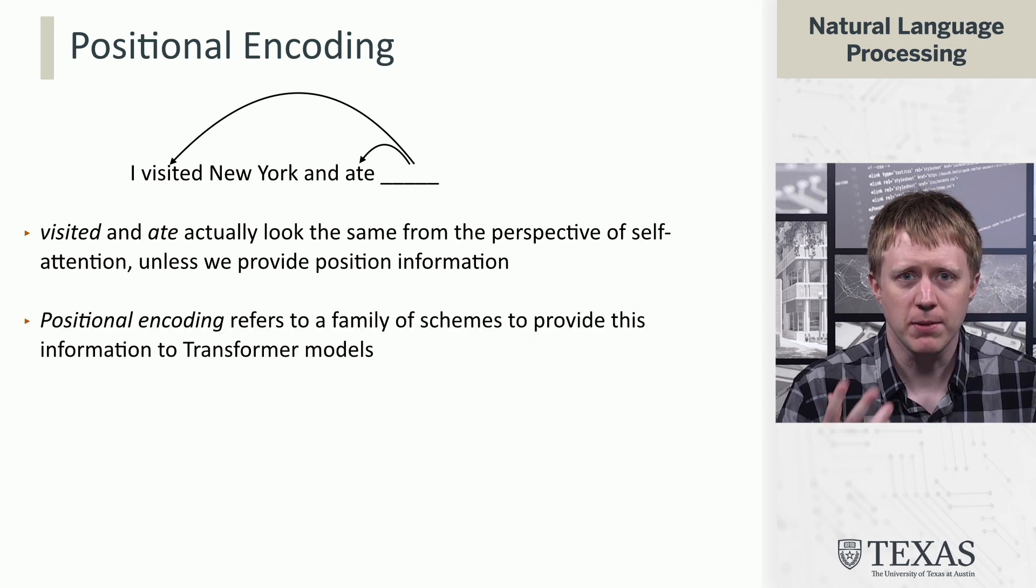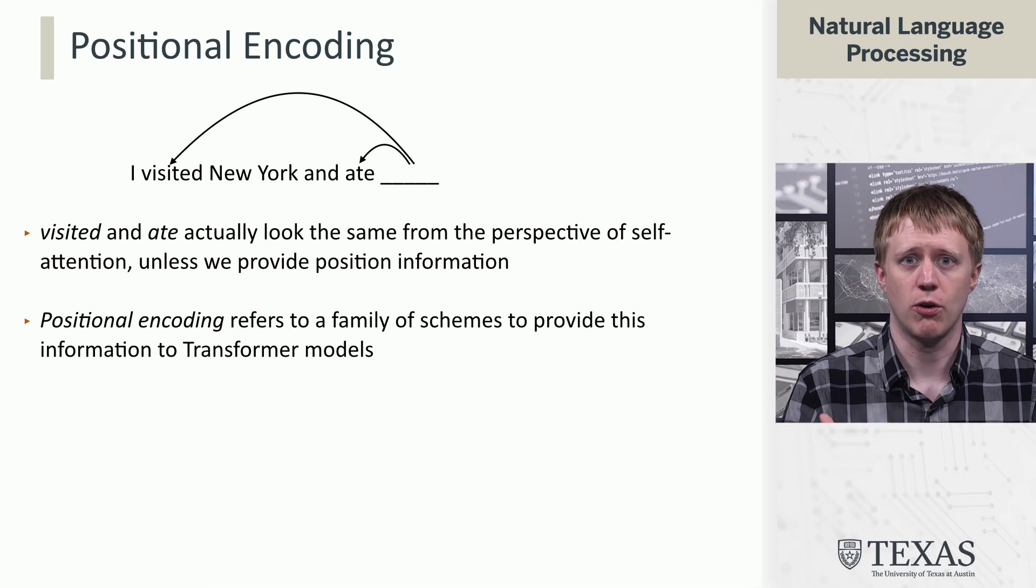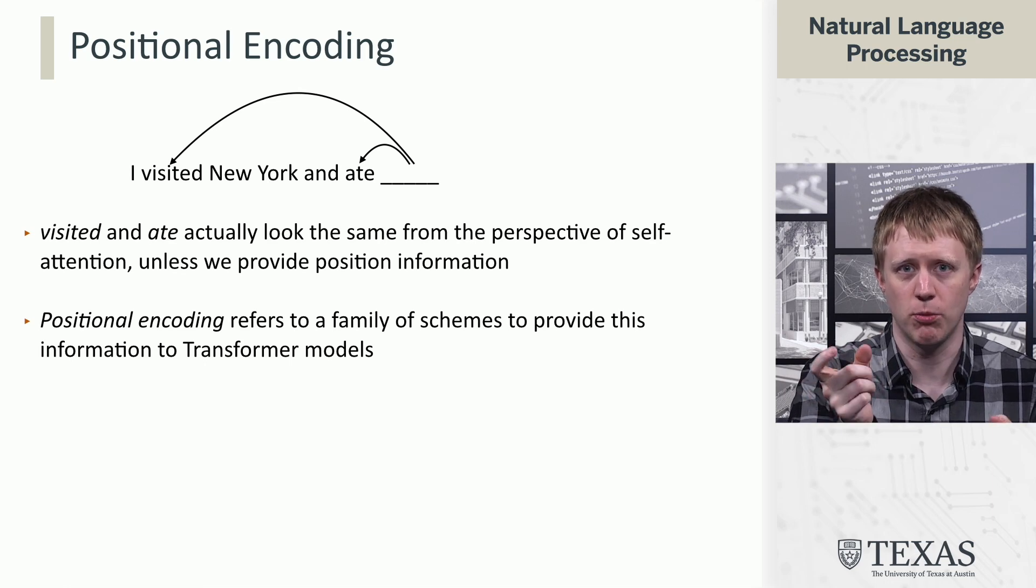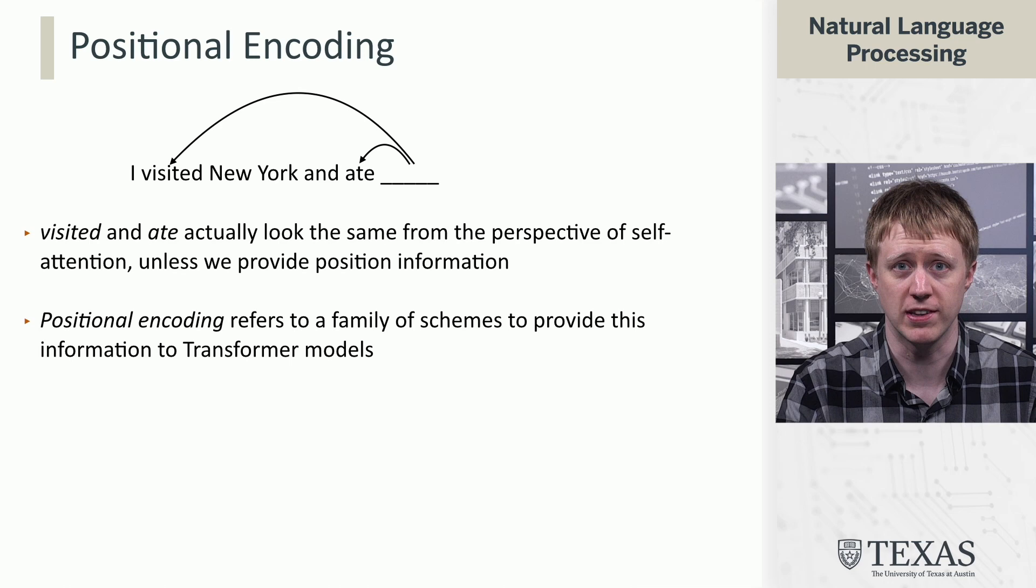So we're going to use a family of schemes called positional encoding that are going to provide this kind of information to transformers so that they're going to know, oh, okay, you need a word here that is something that you eat rather than something that you visit.